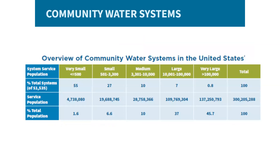This chart provides an overview of community water systems in the United States — those water systems that supply water to the same population year-round. There are just over 51,000 community water systems in the United States, with the greatest percentage of those systems, roughly 55%, serving 500 or fewer customers. Small water systems serving small populations face exceptional challenges in delivering clean, safe, and affordable water to their customers due to a number of factors that limit the water system's capacity.